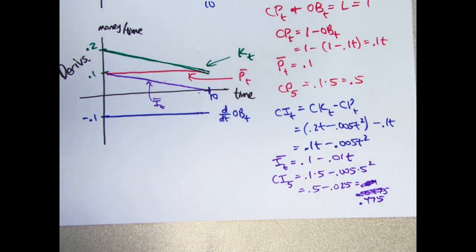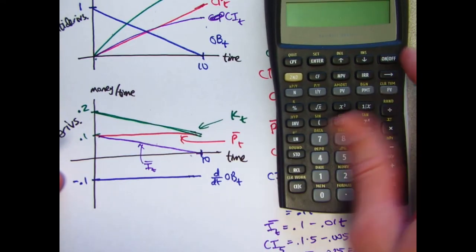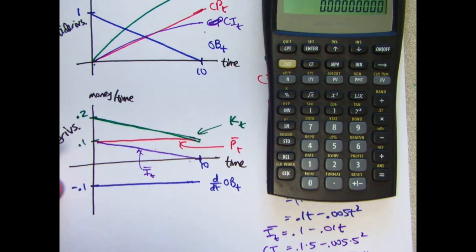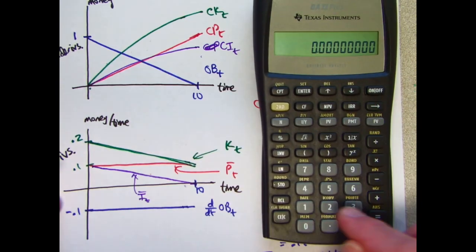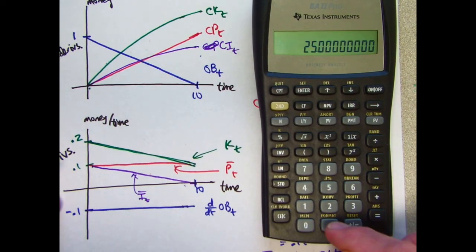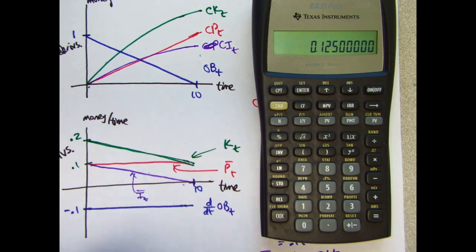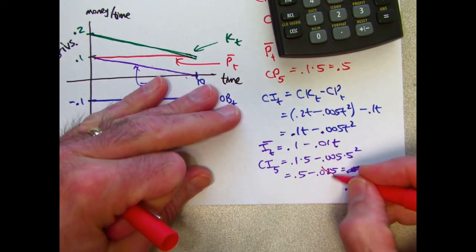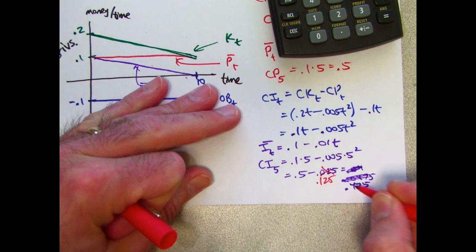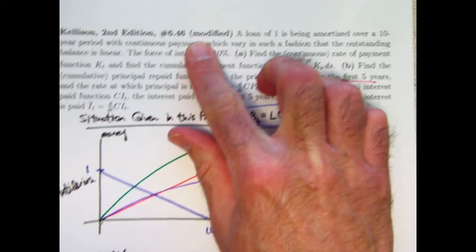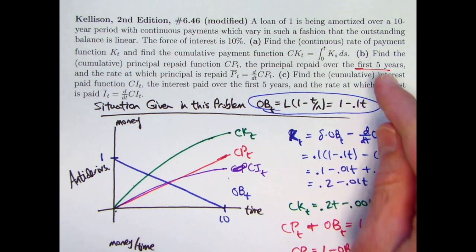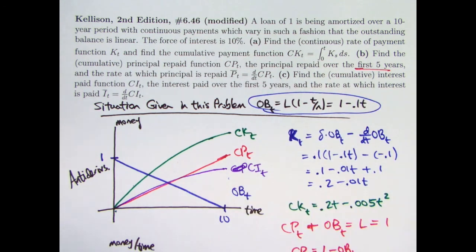I'm back and there was a mistake at the very end. I should have used my calculator instead of doing it in my head. Five squared is 25, and 25 times 0.005 is not 0.025 — it is 0.125. So the correct calculation is 0.5 − 0.125 = 0.375. That is the correct final answer for CI(5). By the way, Kellison's problem mostly refers to finding these values at time 5; I just expanded on it greatly.